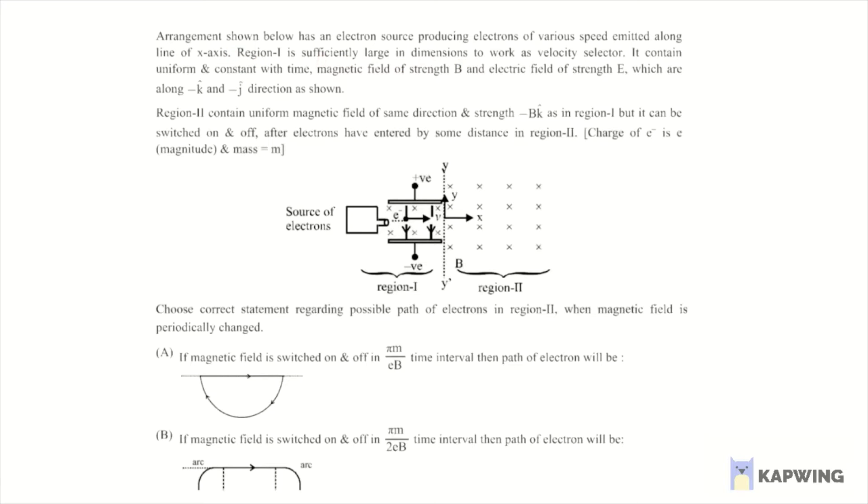Region 1 is sufficiently large in dimension to work as a velocity selector. It contains uniform and constant with time magnetic field of strength B and electric field of strength E, which are along minus k cap and minus j cap direction.